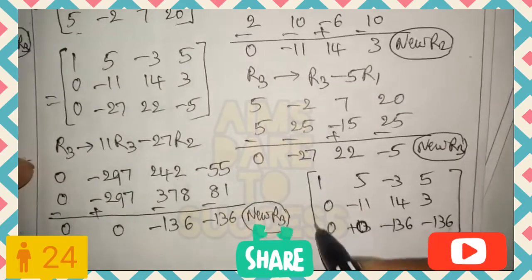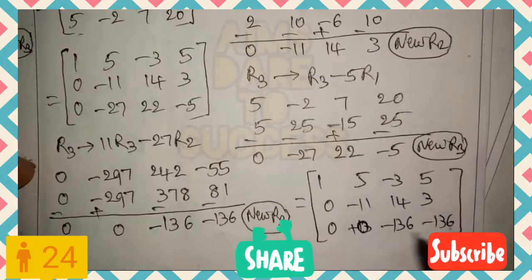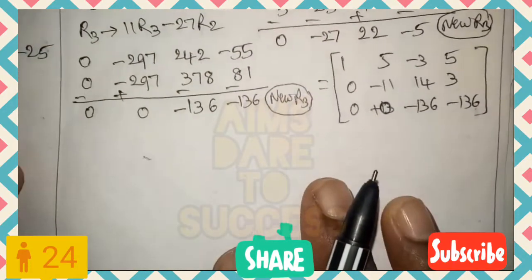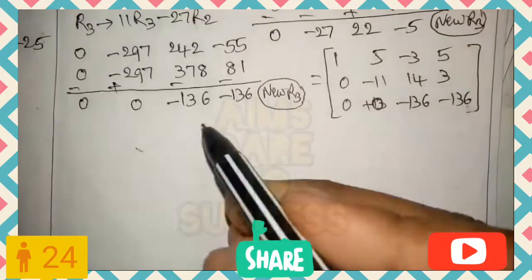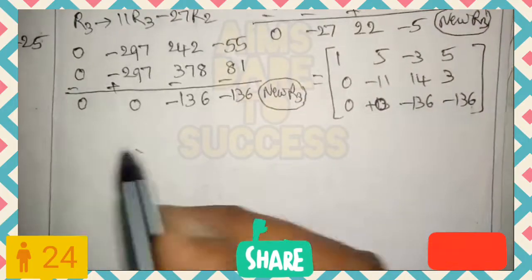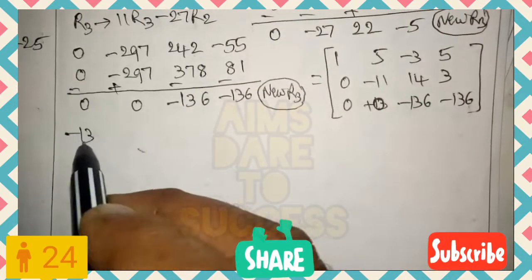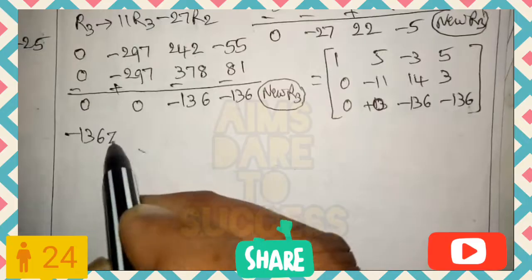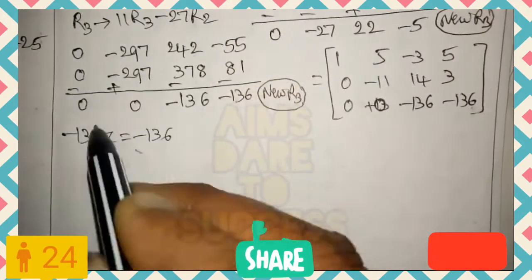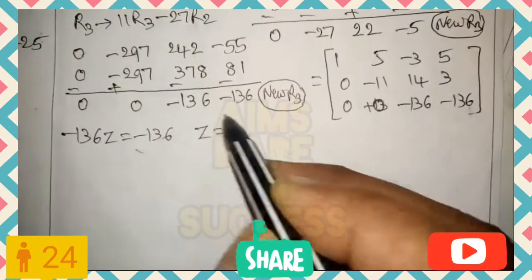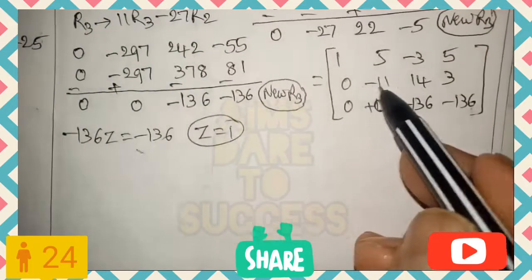We have now achieved the L-symbol pattern with 1, 0, 0 in the diagonal structure. The third row relates to z: -136z = -136. Cancelling -136 from both sides, we get z = 1.